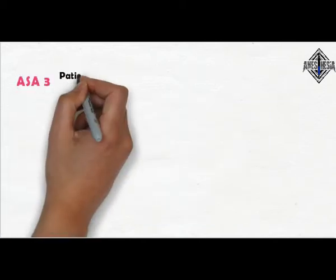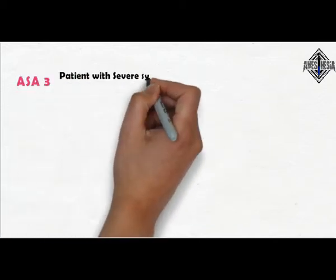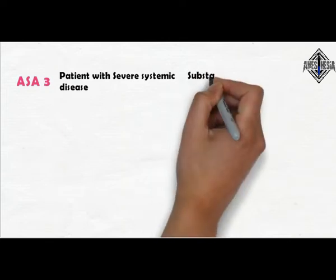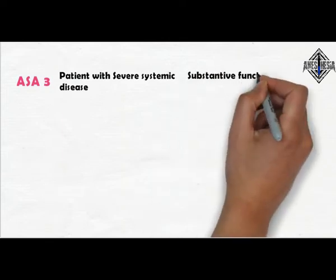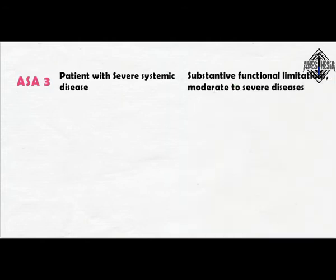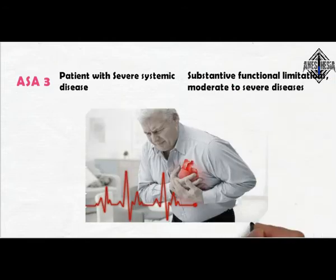ASA 3 — Patient with severe systemic disease. Patient with substantive functional limitations, moderate to severe diseases. For example: poorly controlled diabetes or hypertension, COPD, morbid obesity, active hepatitis, alcohol dependence or abuse, and implanted pacemaker.